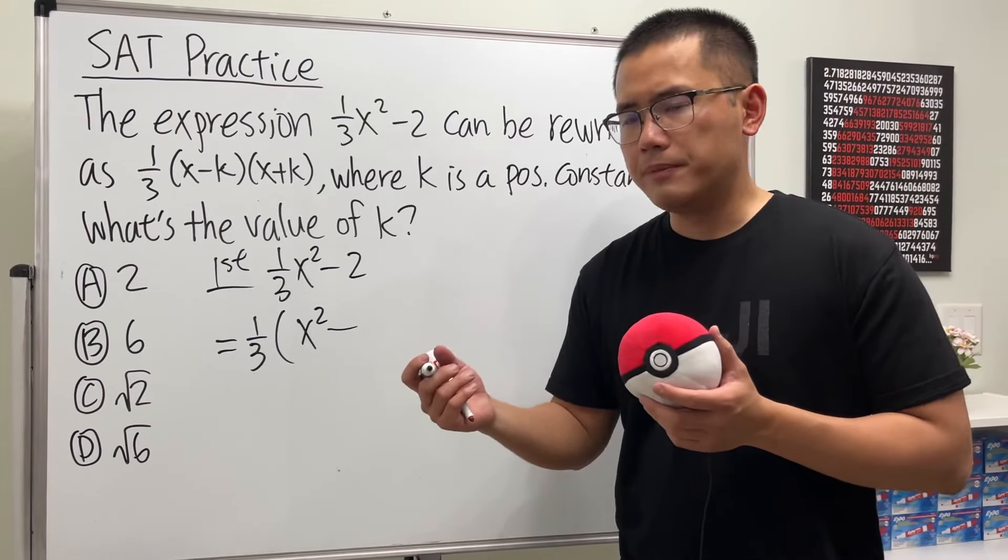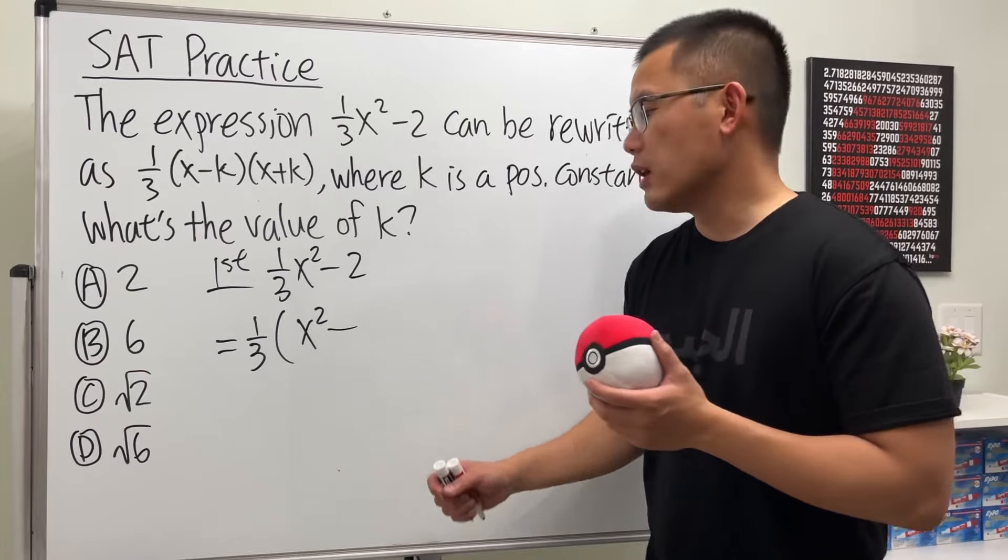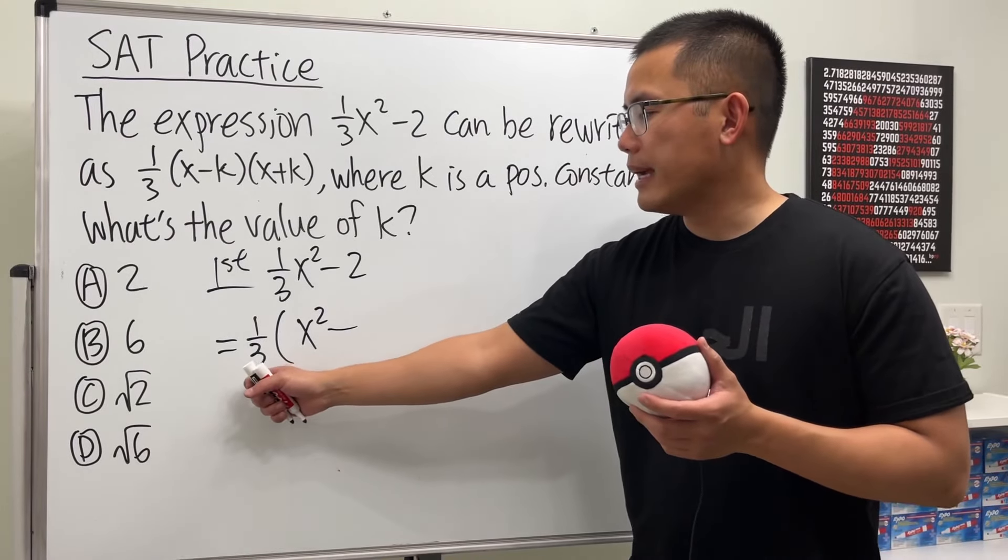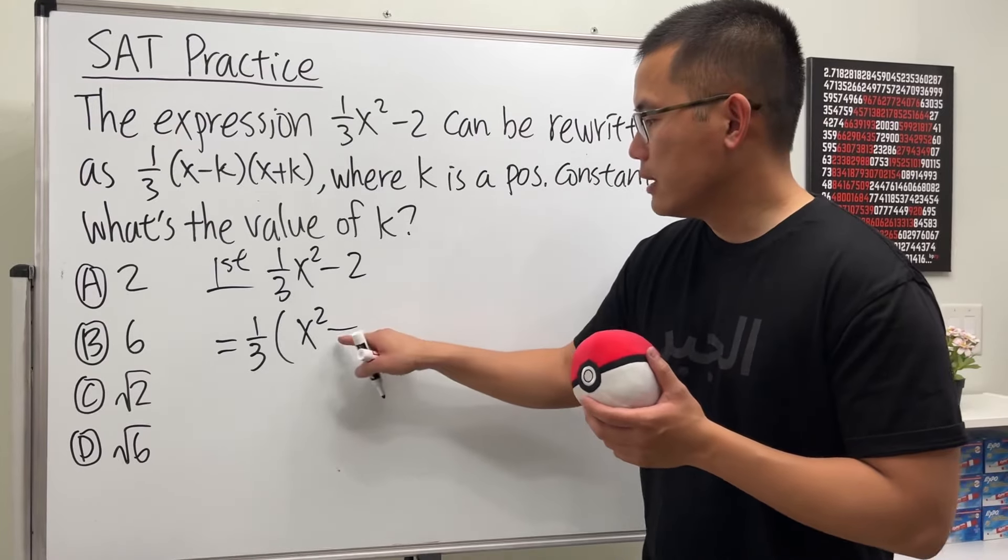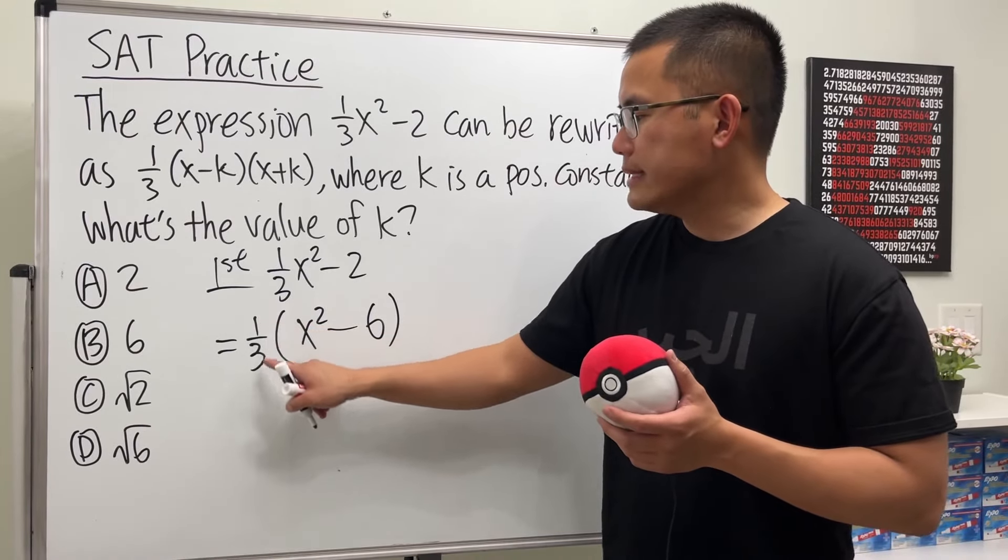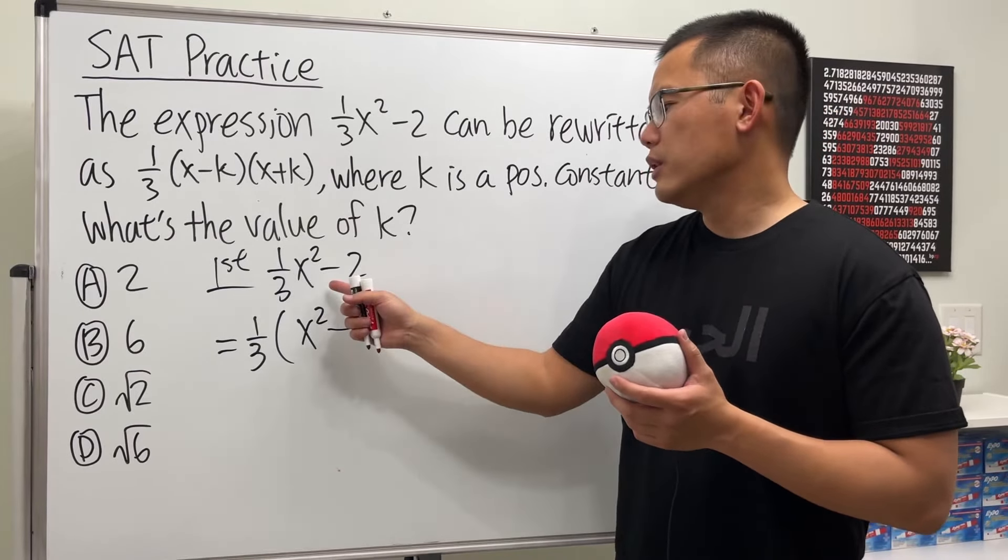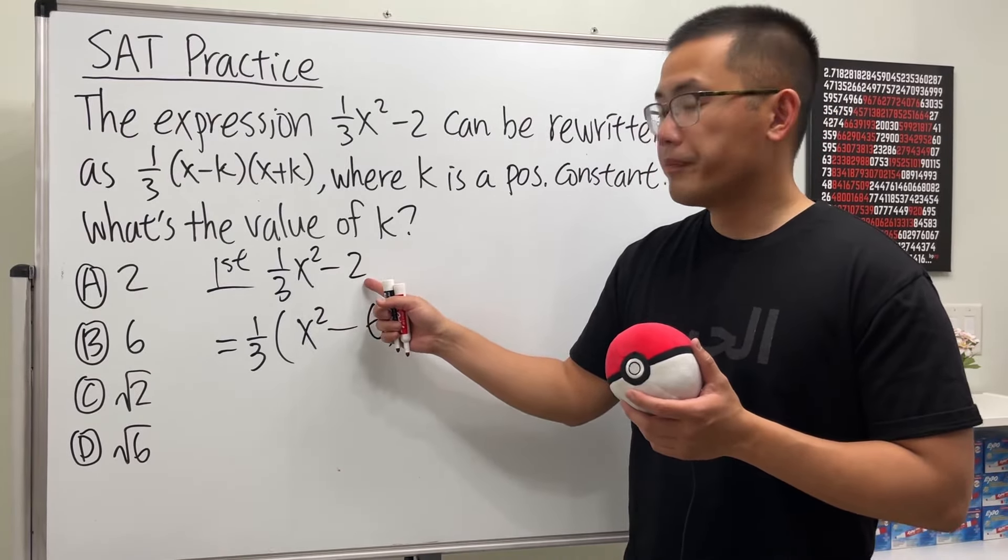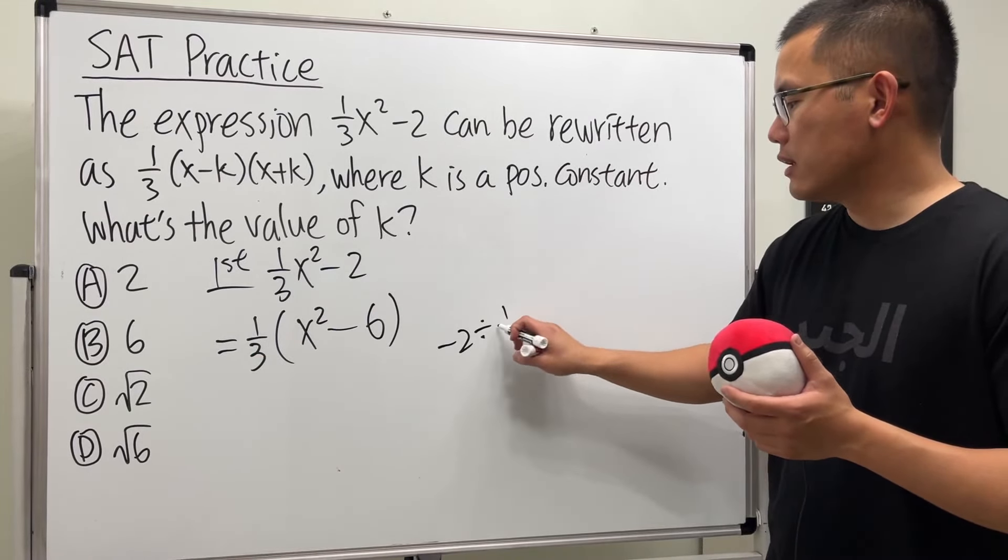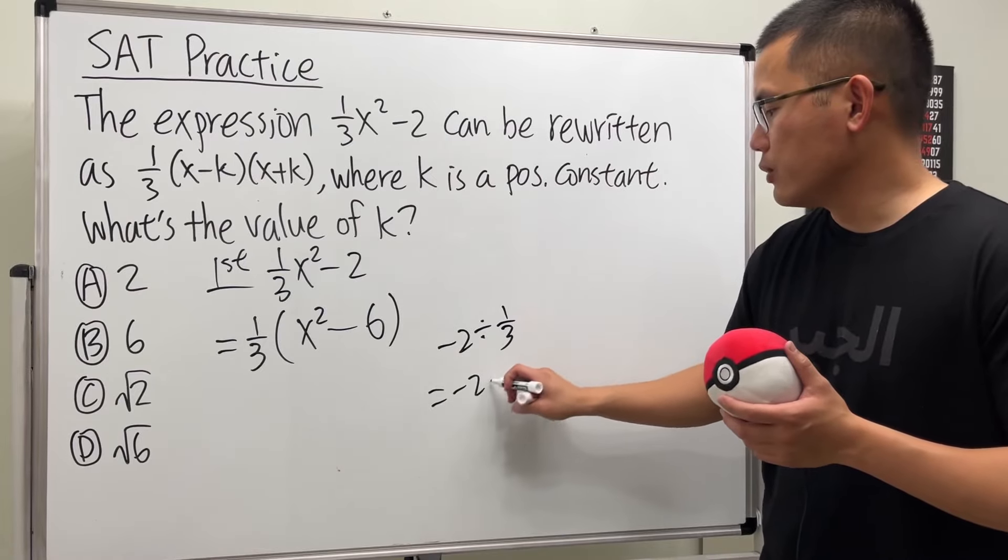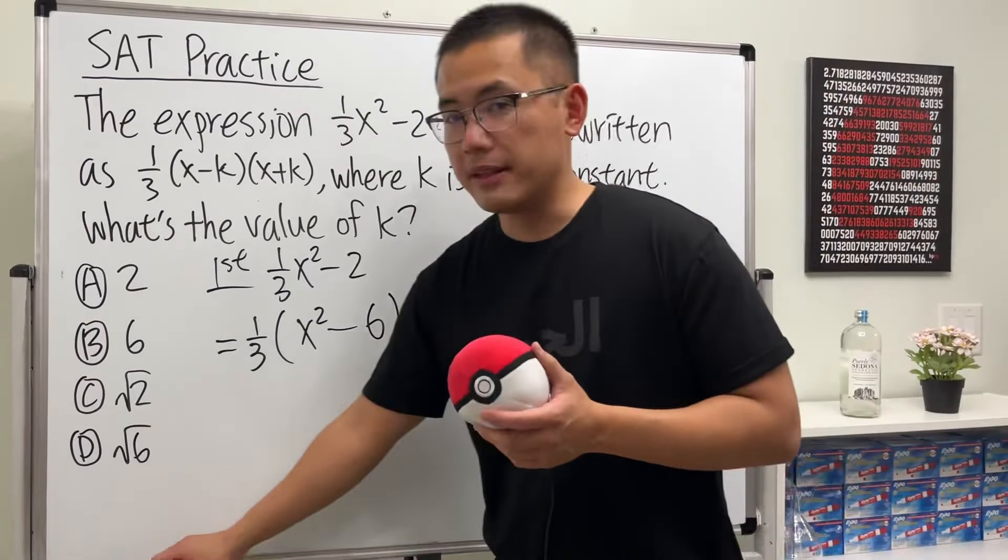This right here might be tricky. What do we get here? We will have to ask ourselves, what divided by 3 will give us negative 2? And the answer for that is minus 6. You see, 1/3 times negative 6 is negative 2. And you can use negative 2 divided by 1/3, which is the same as negative 2 times 3 over 1. And that's how we end up with the minus 6 inside.